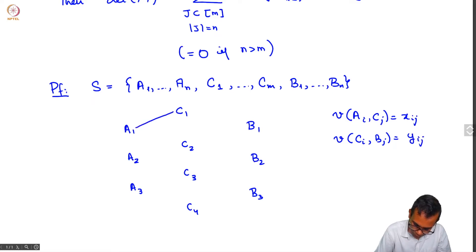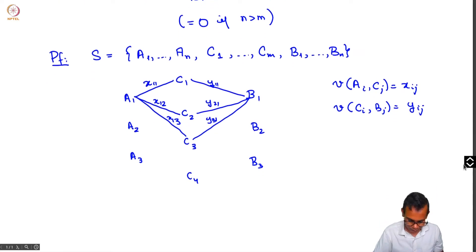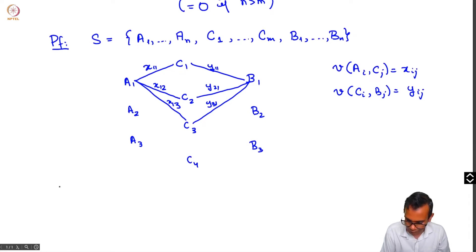The edge from a1 to c1 will be x11, this one will be x12, this will be x13, and so on. On this side we will have y11, y21, y31, and so on. Now all other weights will be 0. Now apply the LGV lemma to this setup.